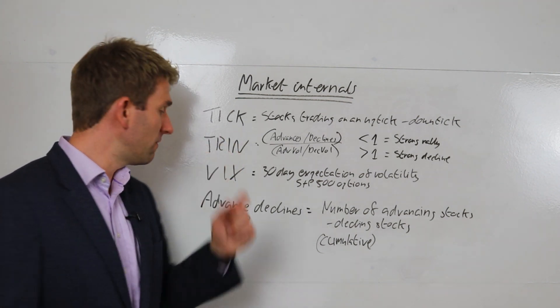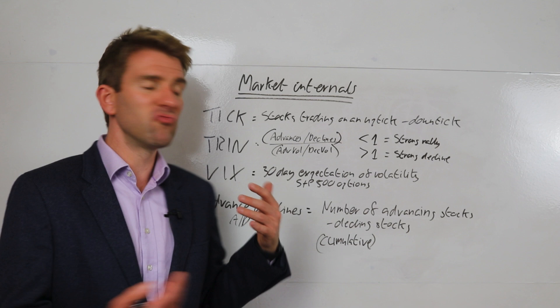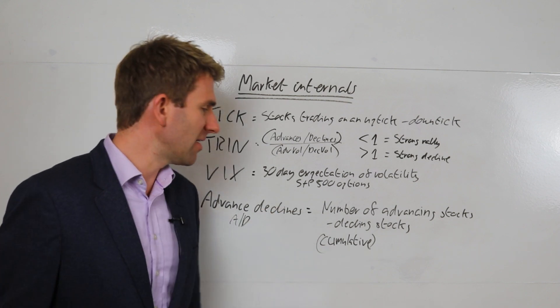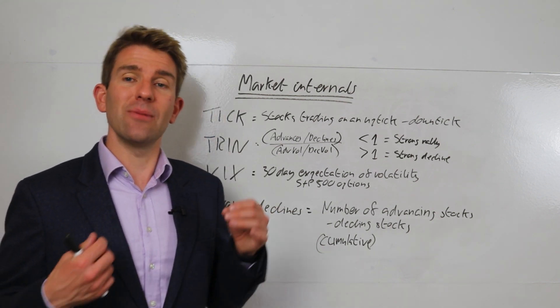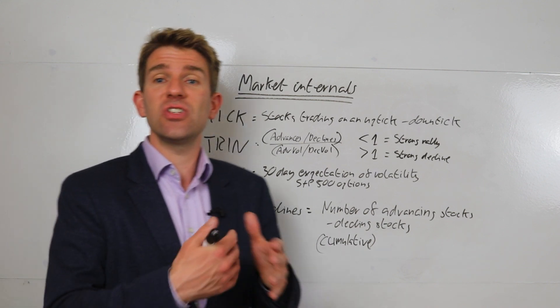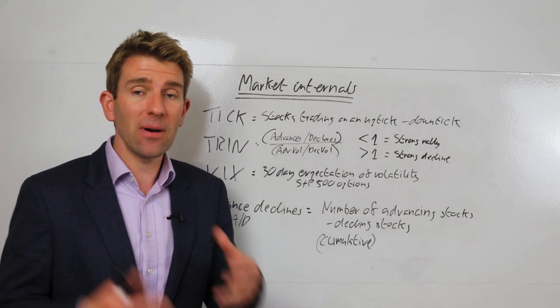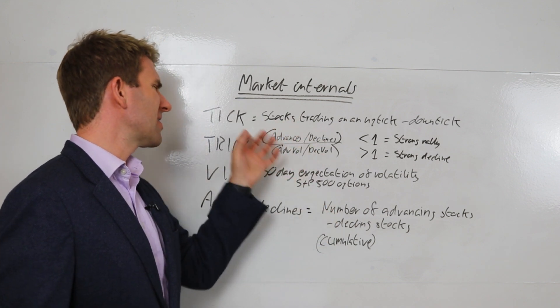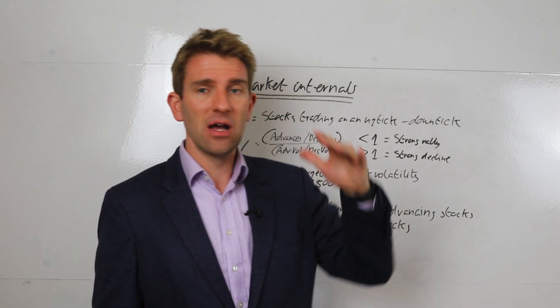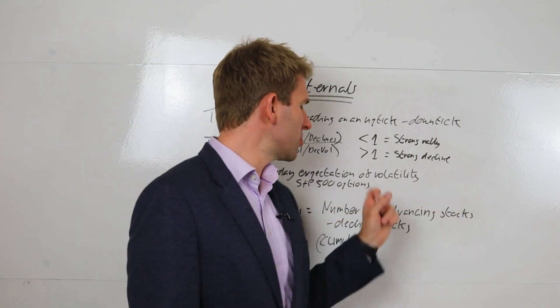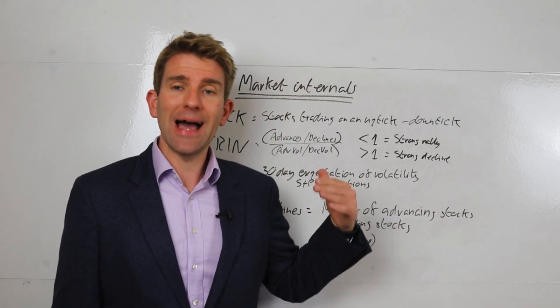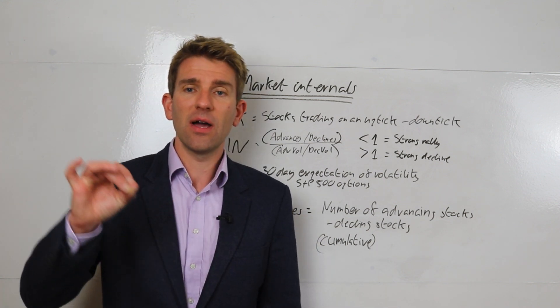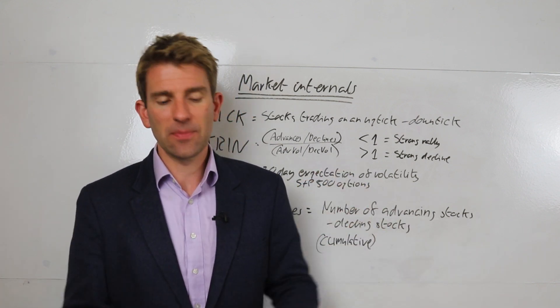All right, the fourth and final one is the advance-declines. I call it advance-declines - it's really advances minus declines. I used to use this a lot, and actually I'm looking forward to revisiting this and researching it again and seeing if it plays any part in my own strategies. If not, maybe it'll play a part in yours. So this is pretty simple as well, kind of not quite as complicated as the TRIN, but same kind of thinking. Number of advancing stocks minus declining stocks, and it's cumulative as well. So as the prices are going up, as it's advancing, advancing, advancing, you're going to see the line go up and up and up.